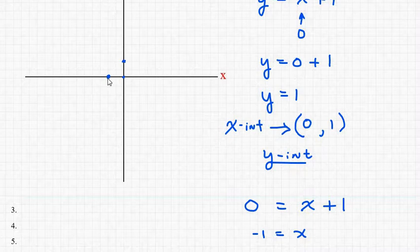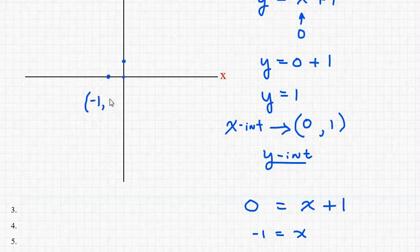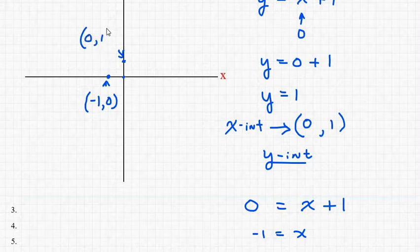So this is where y, let me just go ahead and label it right here. So this is where x is negative 1 and y is 0. That would be this point right here. And of course this point is 0, 1.